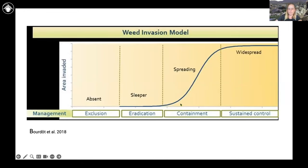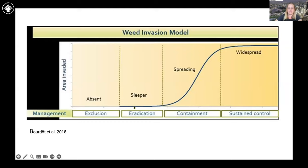Then something changes — maybe they adapt to local conditions — and the population undergoes rapid growth, leveling off at a high population level and can no longer be contained. Being able to discover weeds somewhere along the early part of this curve gives you an opportunity to eliminate them or prevent them from becoming widespread invasive species.